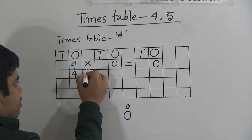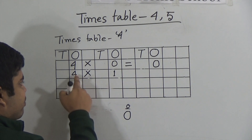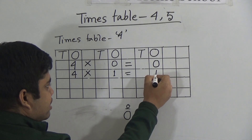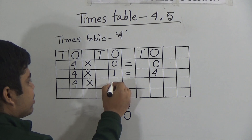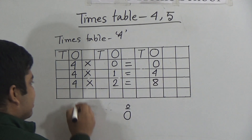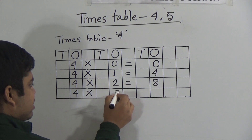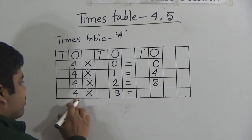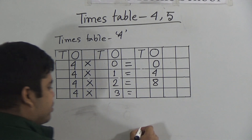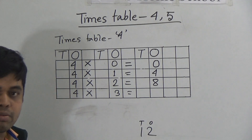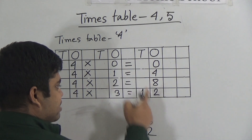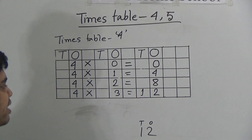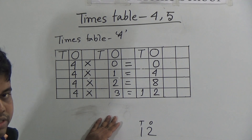4 multiply 1 — that means 4 ones are 4. This is written here. Now 4 twos are 8. Next 4 multiply 3 — 4 threes are 12. Notice it has ones space and tens space both, so we write 1 and 2. 1 is tens space and 2 is ones space. I hope you have understood how to write times table in your CW or SW copy.